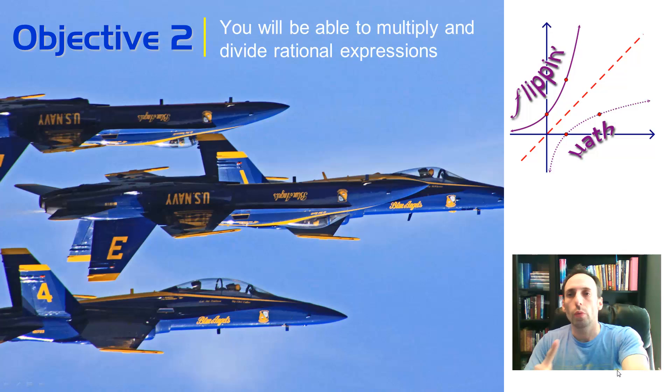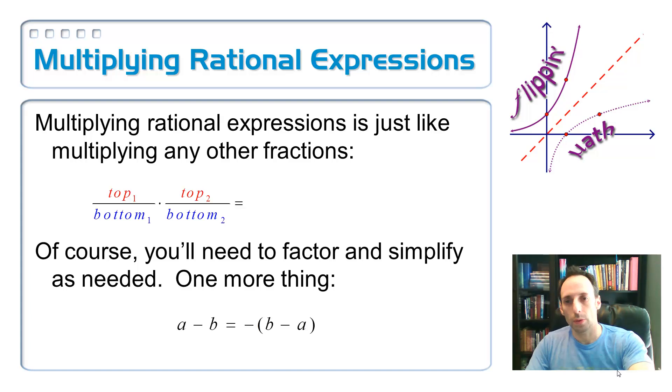You multiply rational expressions just like you multiply fractions. How is that? Top times top and bottom times bottom. You don't have to get a common denominator. I would suggest that you factor and simplify before you do this because maybe some things are going to cancel out and it'll make it that much easier to simplify.